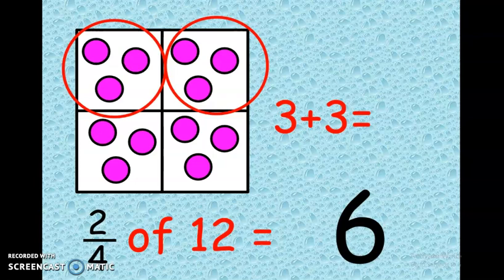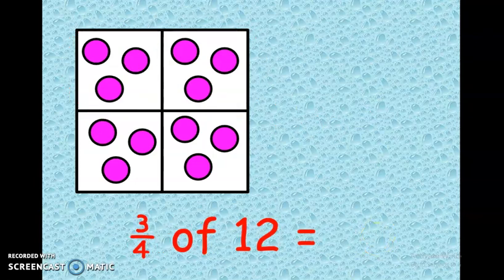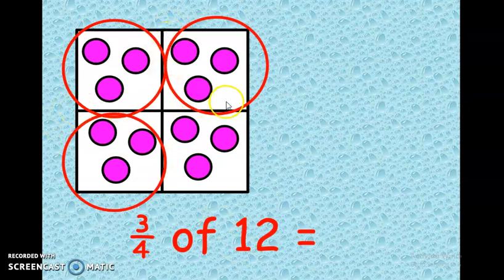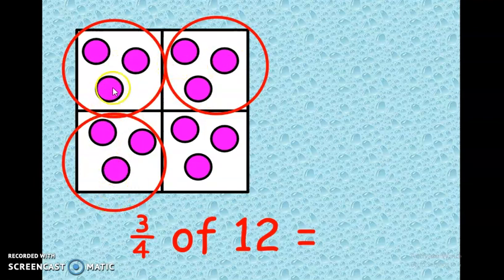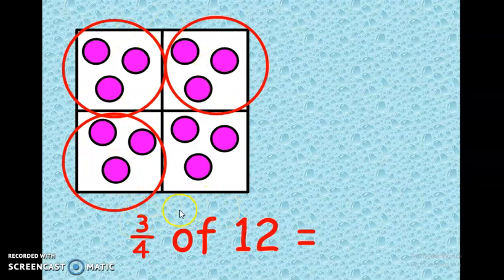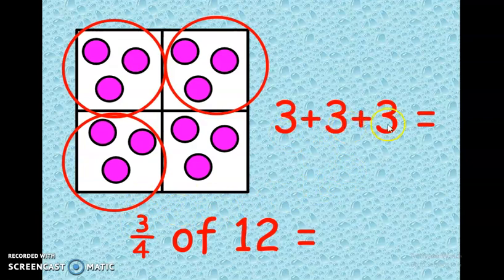Now let's try the last one. You've been asked three quarters of 12. Remember we divide the square into four parts, share each up to 12, then circle three boxes — one, two, three. That means it is 3 plus 3 plus 3. The number on the numerator reads 3, so we count only three quarters. What is three quarters of 12? It is 3 plus 3 plus 3. The answer is 9.